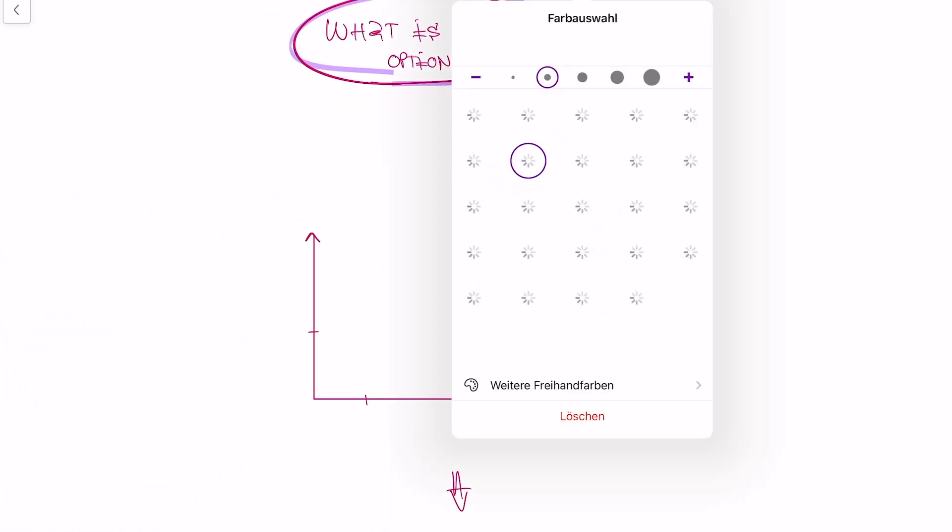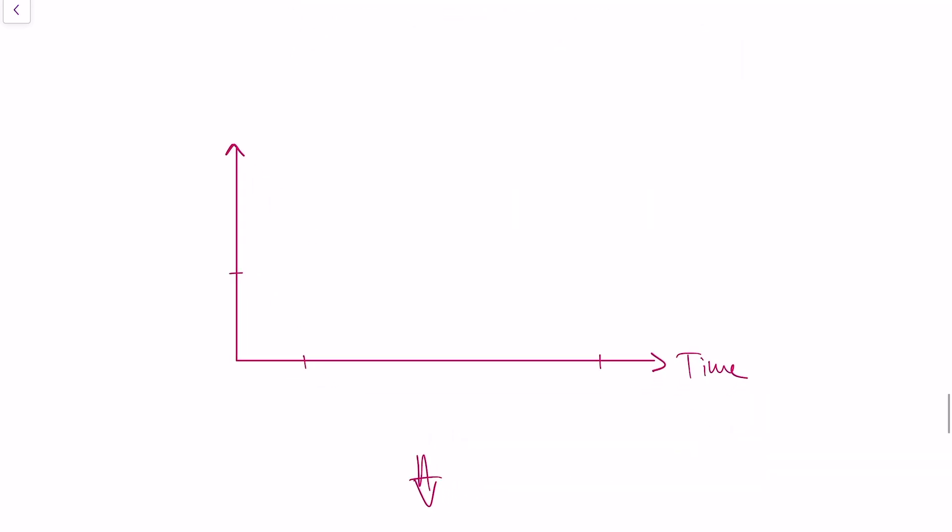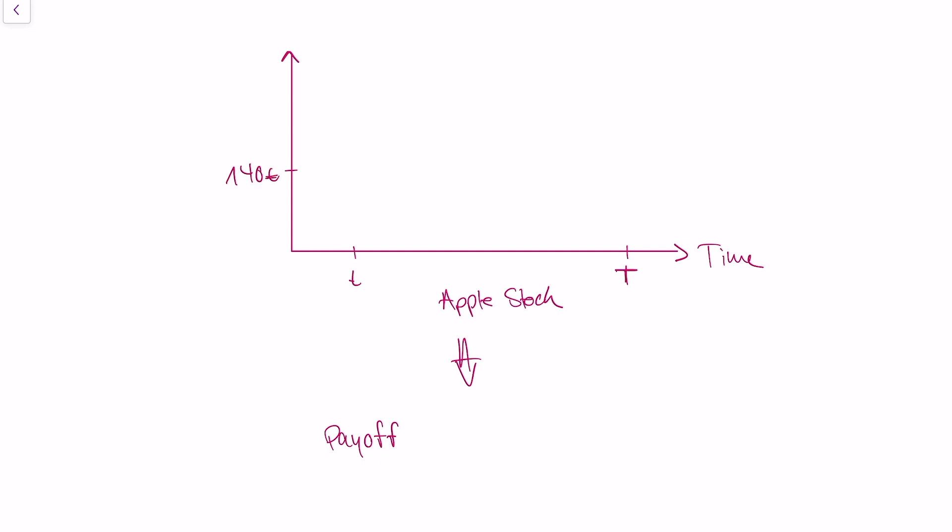A call option is a specific derivative. In other words, it's a contract with another person. And here's what the call option contract says, maybe over an Apple stock. The contract says in a year's time, I just call this point in time large T, you have the option to buy an Apple stock at 140 euros. So this is what we call the strike price.